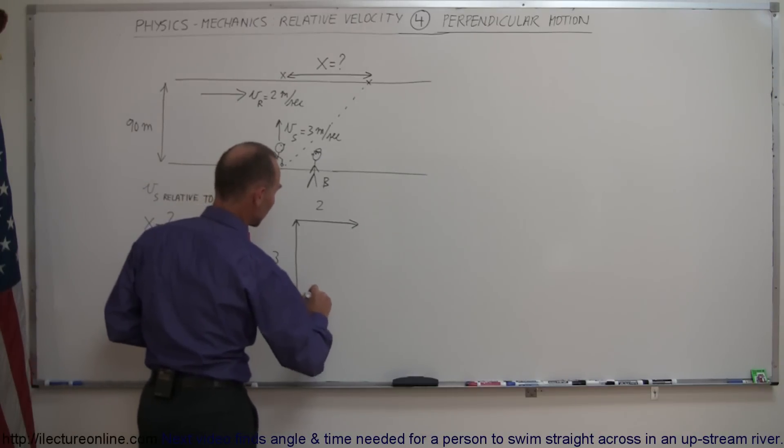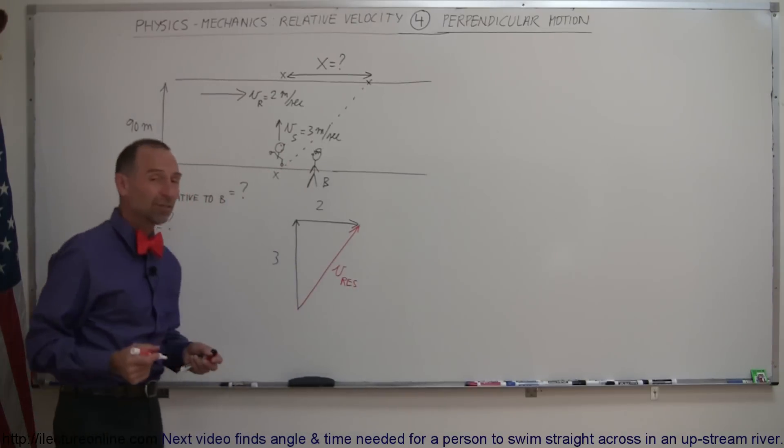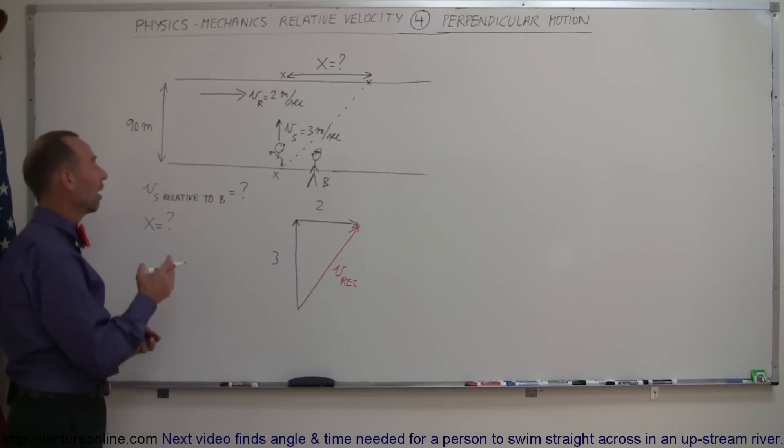So this would then be what we would call the resultant velocity, V sub R. Oh no, I can't call it V sub R because I used R for river already. So I'll just say V resultant or the effective velocity or the apparent velocity of the swimmer relative to B.